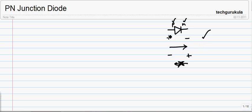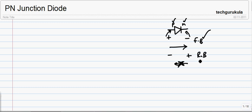When you apply positive to P side and negative to N side, we say this is forward biased. When it is forward biased, it allows current to flow through it. When it is reverse biased — positive voltage is applied to N side and negative to P side — we call this reverse bias, in which it will not allow current to flow through it.